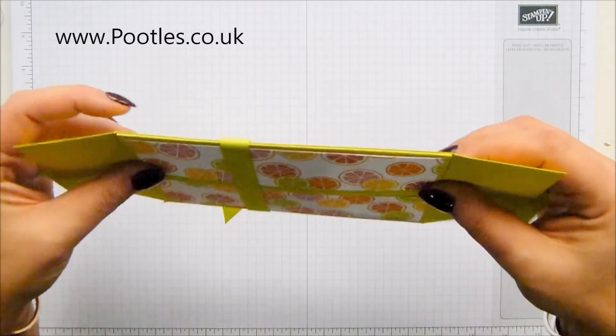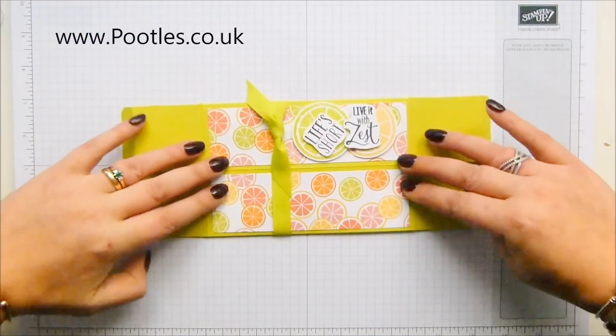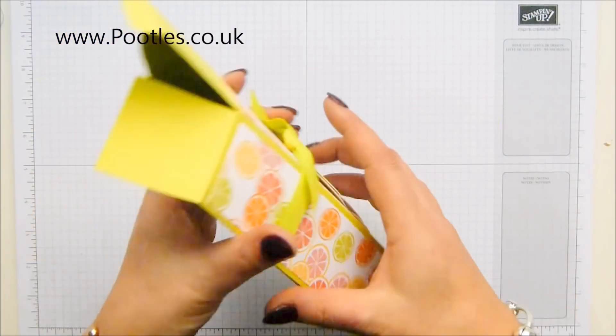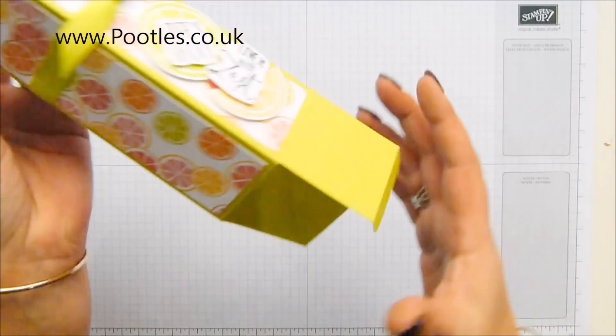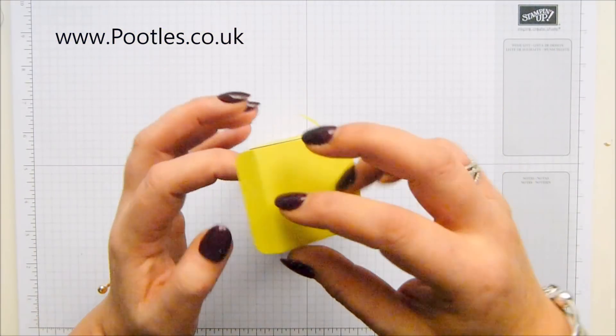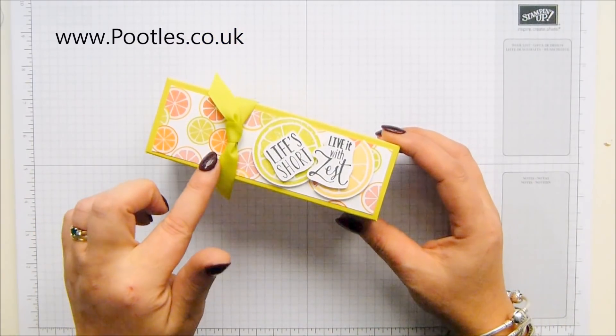This is today's project. Folds flat, flat, flat, flat, totally flat, and you only need one piece of adhesive. I love it when there's a project that only needs one piece of glue and that is on the seam.